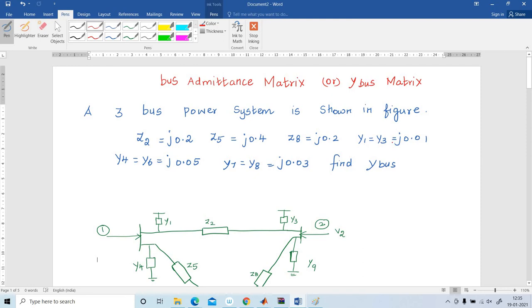Y1 equal to Y3 is equal to j0.01. Y4 equal to Y6 equal to j0.05. Y7 equal to Y8 equal to j0.03. Find Y bus.